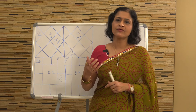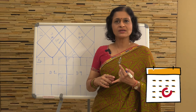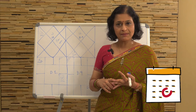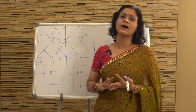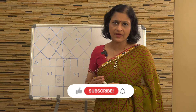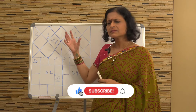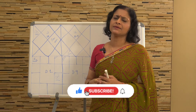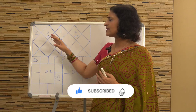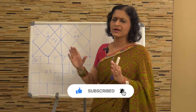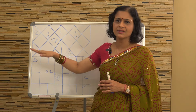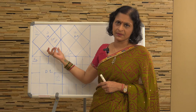Counting from July — July, August, September, October, November, December, January — that makes it around 210 days and most of February. So nearly we have a period until mid-February when Rahu would be transiting through Uttarabhadrapada.